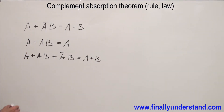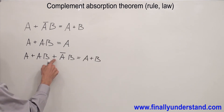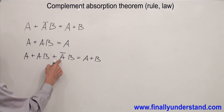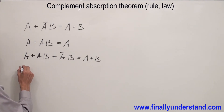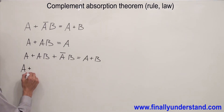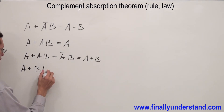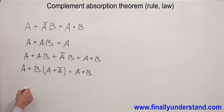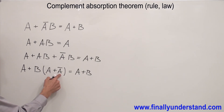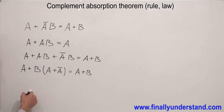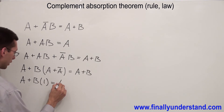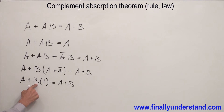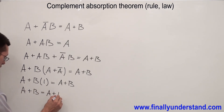Let's check if this is true. I'm going to factorize B from these two terms, because I'm going to have complements in the parentheses and these two complements are going to cancel each other. So I copy down A and OR, then factorize B. Inside the parentheses I'm going to have A or A'. Anytime you OR complements, the answer is always 1. So I have A or B times 1.